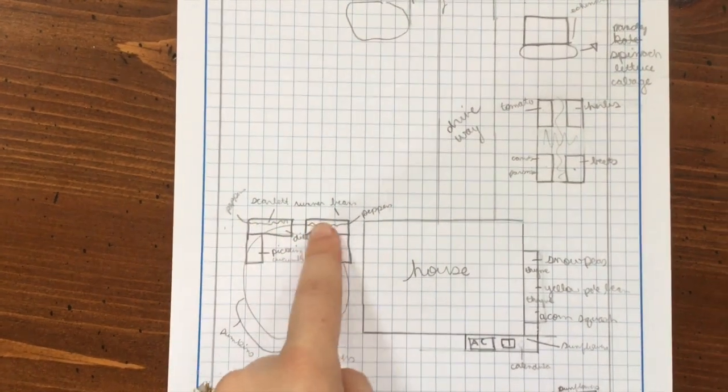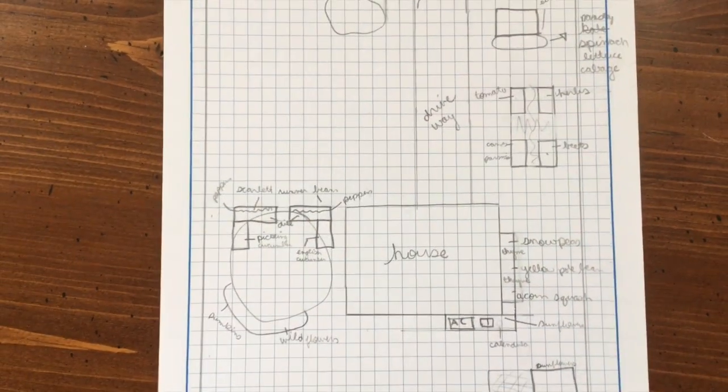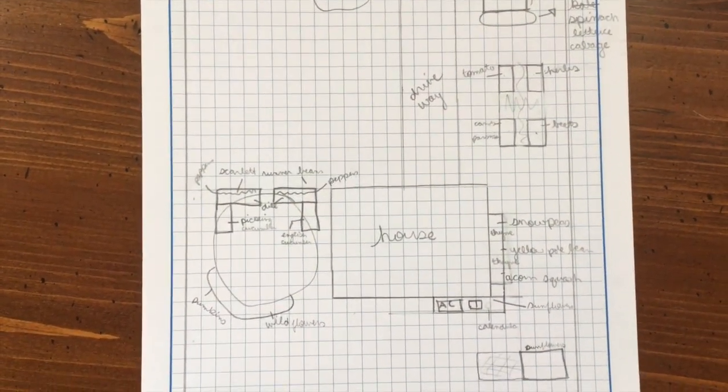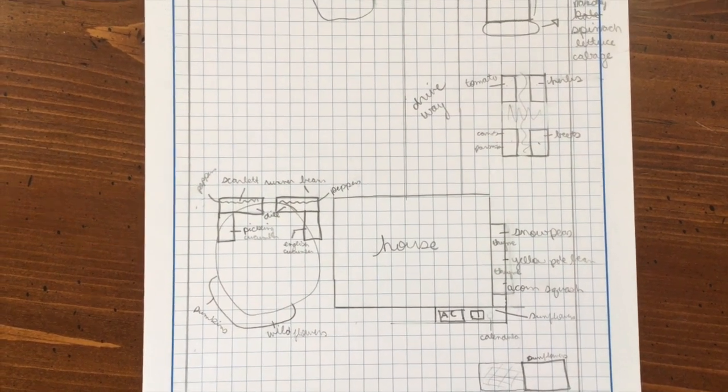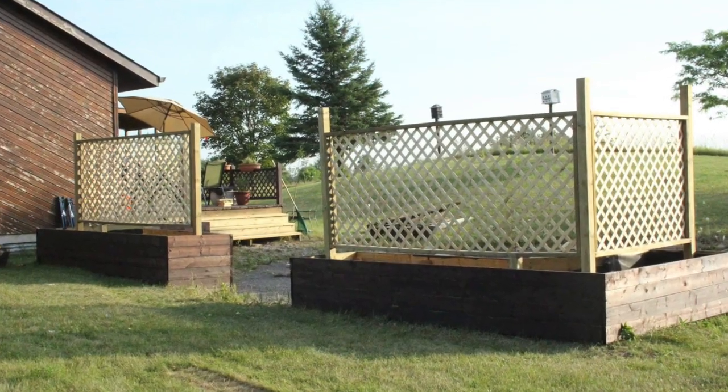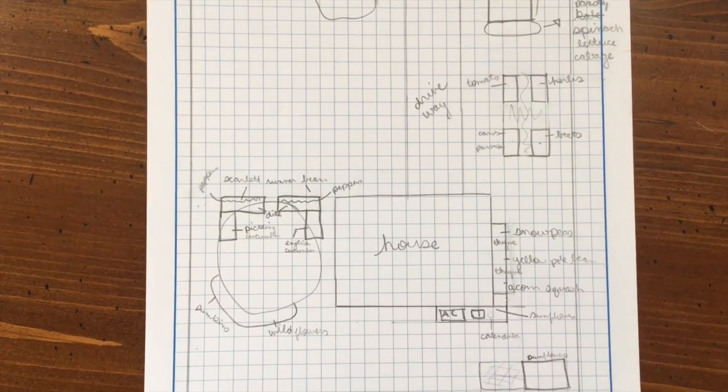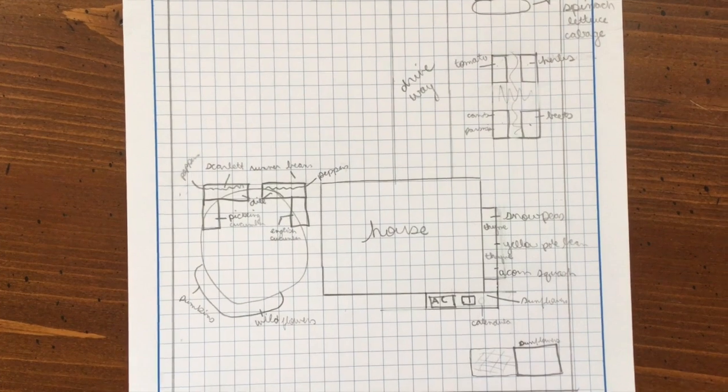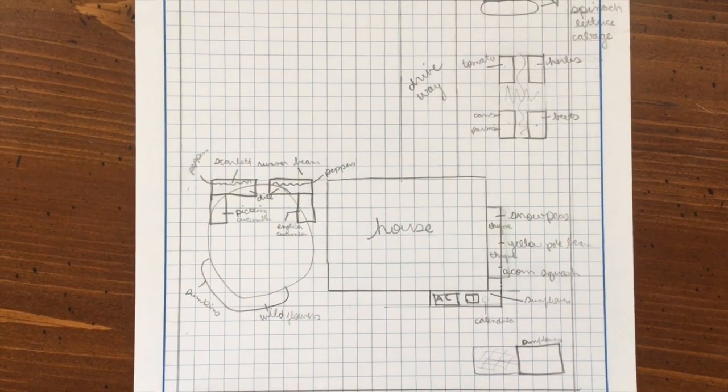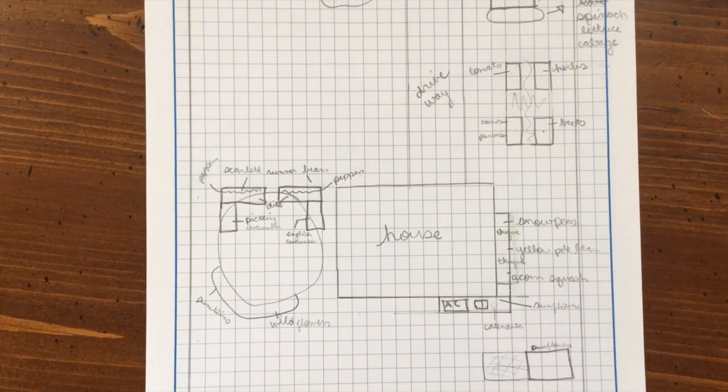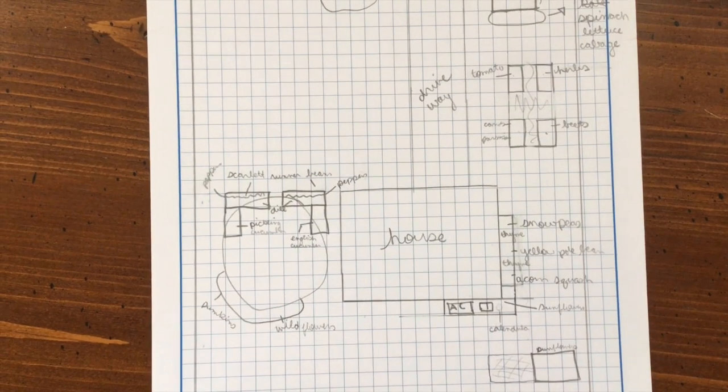Around the patio are some big L-shaped planters that my husband and his father built a few years ago. Previously I used them for just various flowers and then last year I decided to do more vegetables in them. They did really well there so I plan to do that again.